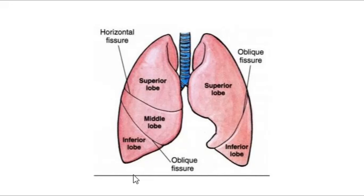The fourth surface is the mediastinal surface. When we talk about the mediastinal surface, we're talking about the side where you can see the hilum. The hilum is the area where blood vessels, veins, and the bronchus all travel through the lung. If you turn the lung around, you can see where all the blood vessels and veins are leaving — that's the hilum. So the surfaces are: costal, diaphragmatic, and mediastinal.